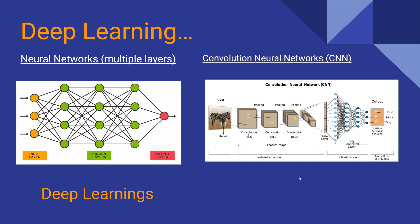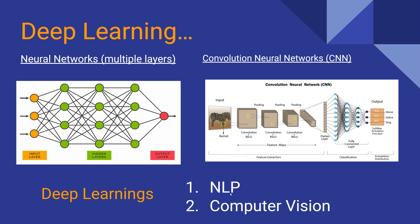In deep learning, you can specialize in NLP (Natural Language Processing) or Computer Vision. As an AI engineer, you can specialize in one of these areas to build focused expertise.